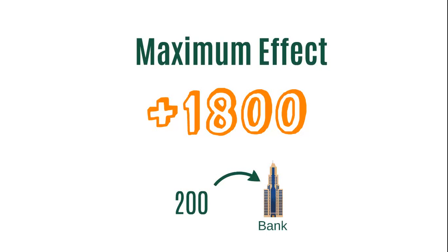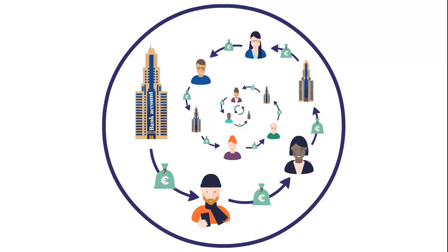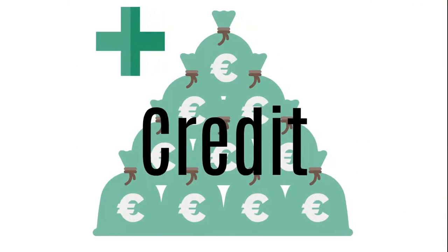I should mention that the whole 1,800€ is only created when the new money finds its way back to a bank to be lent again, just like in our example. The generation of credit is a way to increase the money available in the economy, to permit the generation of more money.